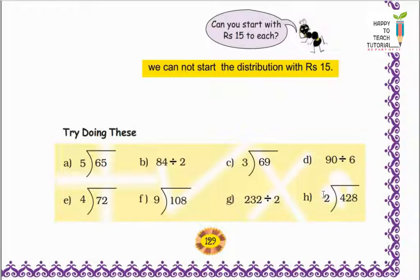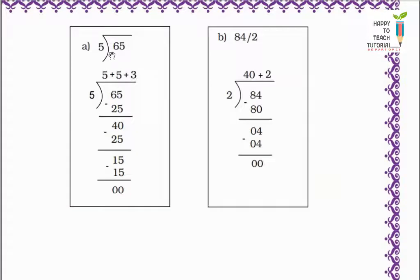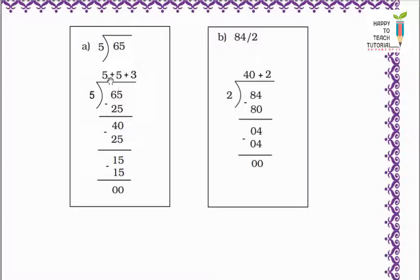Some examples are given for more practice. So let's try to solve them. First is 65 divided by 5. Give 5 to each: 5 into 5 is 25; then 5 more to each: 5 into 5 is 25; then 3 more: 5 into 3 is 15. 15 minus 15 equals 0, remainder is 0 — I distribute 65 rupees equally among 5 people. Each one gets 5 plus 5 plus 3 equals 13 rupees. You can also start directly by giving 10 rupees.